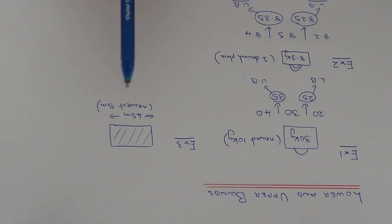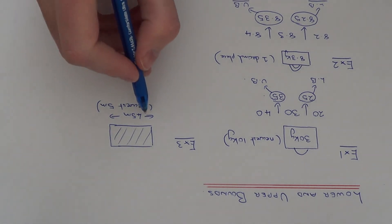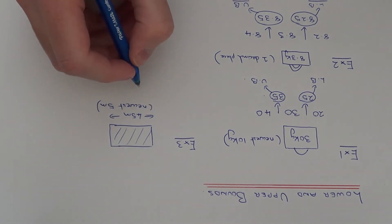So our scale this time is going up in 5, and so on. So let's work out the lower and upper bound for this length. So let's write down 45.